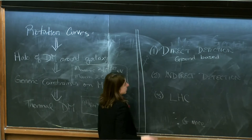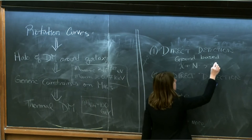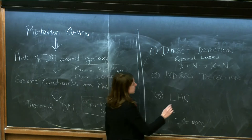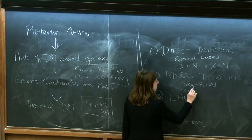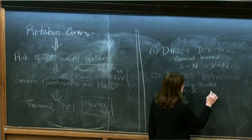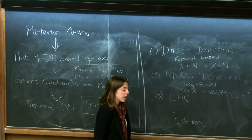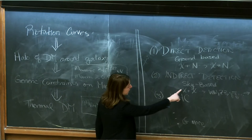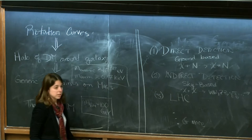Direct detection experiments are ground-based. Specifically, we're looking for what happens when a dark matter particle scatters off of an atomic nucleus. Indirect detection is sky-based — here what we're looking for is signatures of dark matter particles annihilating in the Milky Way, giving us W bosons, Z bosons, or quarks, which can end up producing photons. We can then search for very high energy gamma rays as a way of telling whether dark matter annihilated in this fashion.